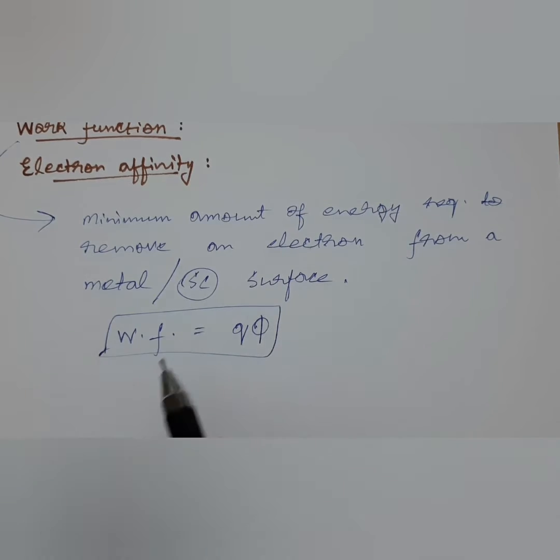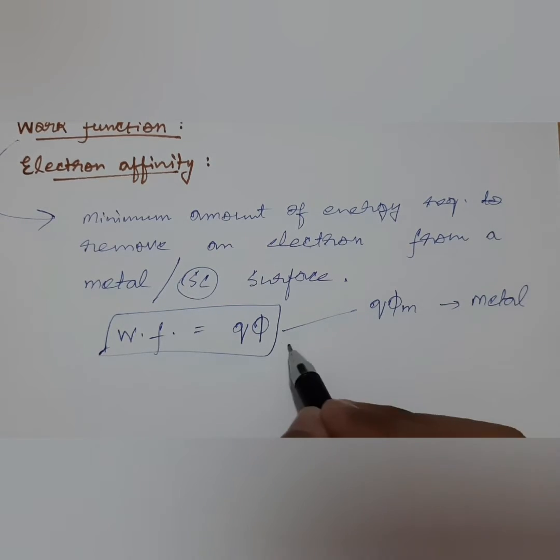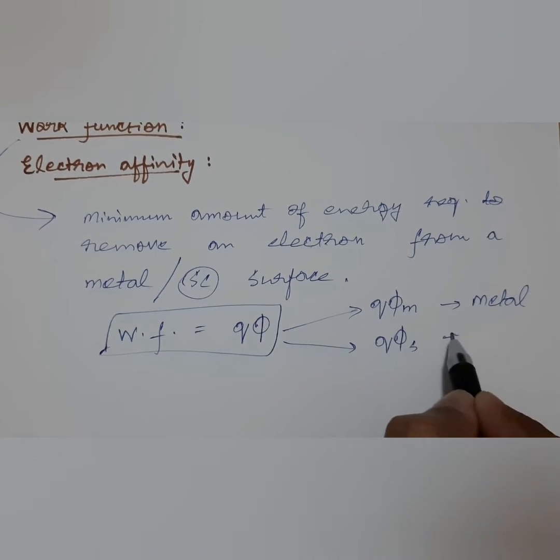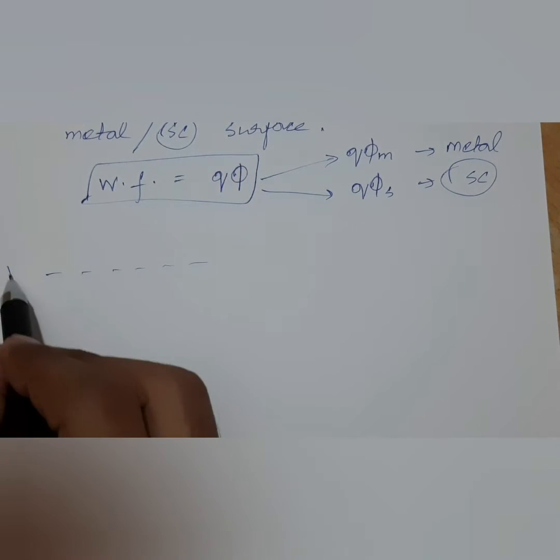So in simple terms, q phi is the energy required to remove an electron at the Fermi level of that metal or semiconductor to the vacuum energy level outside that metal or semiconductor. For metal it is given as q phi m, and for semiconductor it is given as q phi s.